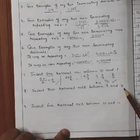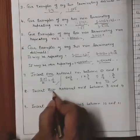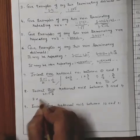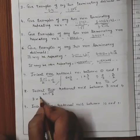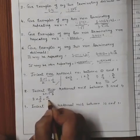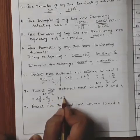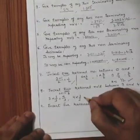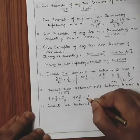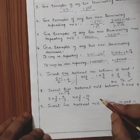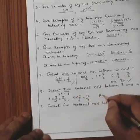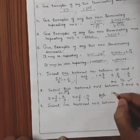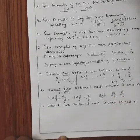Insert two rational numbers between 3 and 4. If you have to insert two numbers, add 1 to get 3. Multiply and divide 3 by 3 to get 9 upon 3. Multiply and divide 4 by 3 to get 12 upon 3. The two numbers in between 9 upon 3 and 12 upon 3 are 10 upon 3 and 11 upon 3.